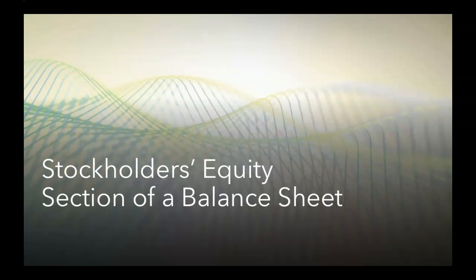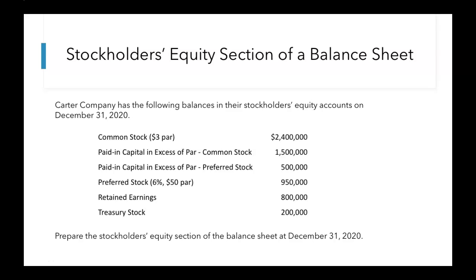Let's talk about the stockholders' equity section of a balance sheet. We have an example problem: Carter Company has the following balances in their stockholders' equity accounts on December 31st, 2020. We're given information for common stock, paid-in capital in excess of par for both common and preferred, preferred stock, retained earnings, and treasury stock. We're going to use all of that information to prepare the stockholders' equity section of the balance sheet at December 31st, 2020.